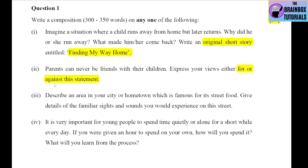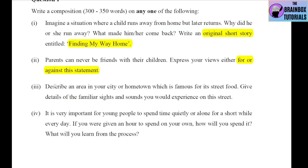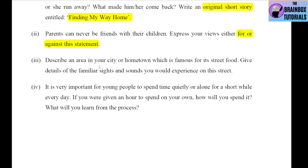The third option: describe an area in your city or hometown which is famous for its street food. Give details of the familiar sights and sounds you would experience on this street. Think of which street food you like or which street is famous, and describe that area. Include auditory and visual imagery because this is a descriptive essay — what do you see, how do you feel, what kinds of sounds are there: sounds of vehicles, people, children, etc.